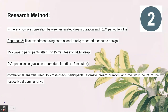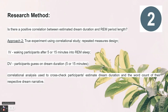For Approach 2 — is there a positive correlation between estimated dream duration and REM period length? — a true experiment using a correlational study with repeated measures design was used. The IV was waking participants after either five or 15 minutes into REM; the DV was whether participants could accurately estimate their dream duration. Participants were woken at random after five or 15 minutes and had to state how long they thought they had been sleeping.